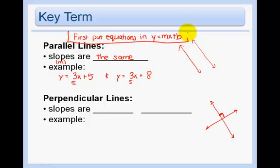Don't forget that. Don't go trying to compare slopes if it's not in y equals mx plus b form. Because the slope is only what's in front of the x if it's in y equals mx plus b form.